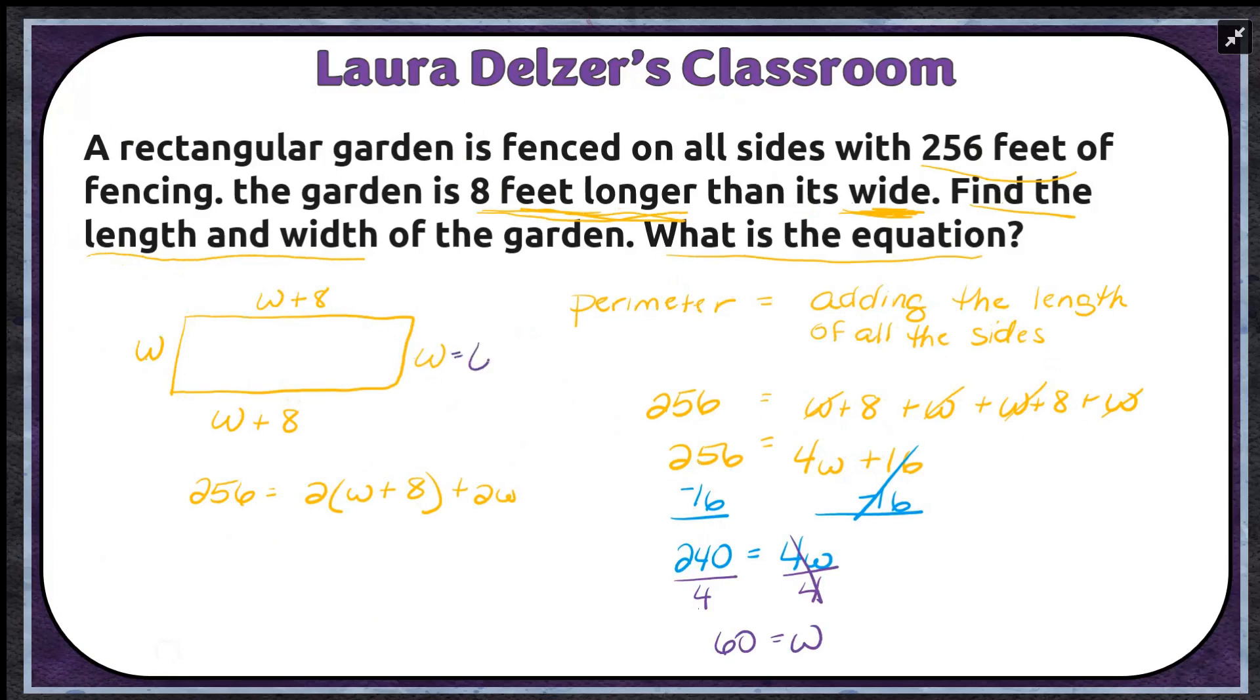So my w here is 60, and then my unit over here is feet. So my width is 60 feet. And then my length is going to be that 60 plus 8 equals 68. So I can write my length here. So we have this as our answers.